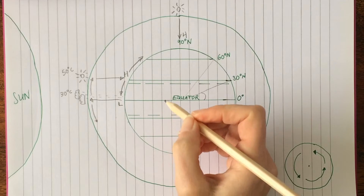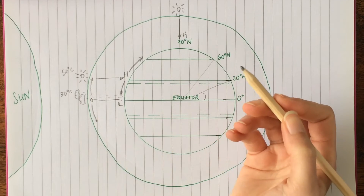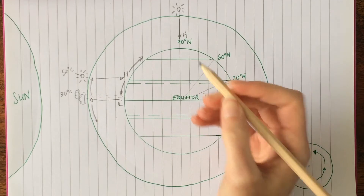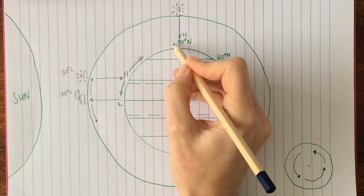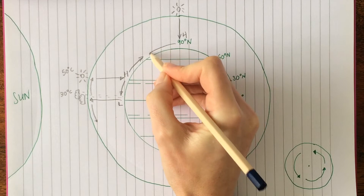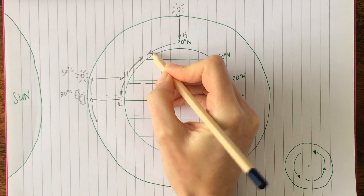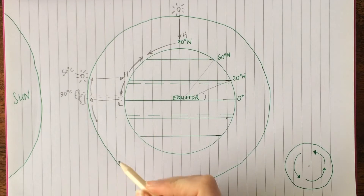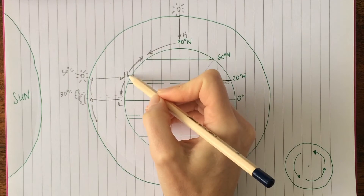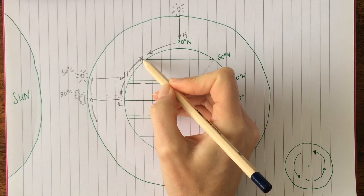As the air hits the surface, it has one option and that is to go south. So the air will travel south and will meet the air coming up from the tropics.